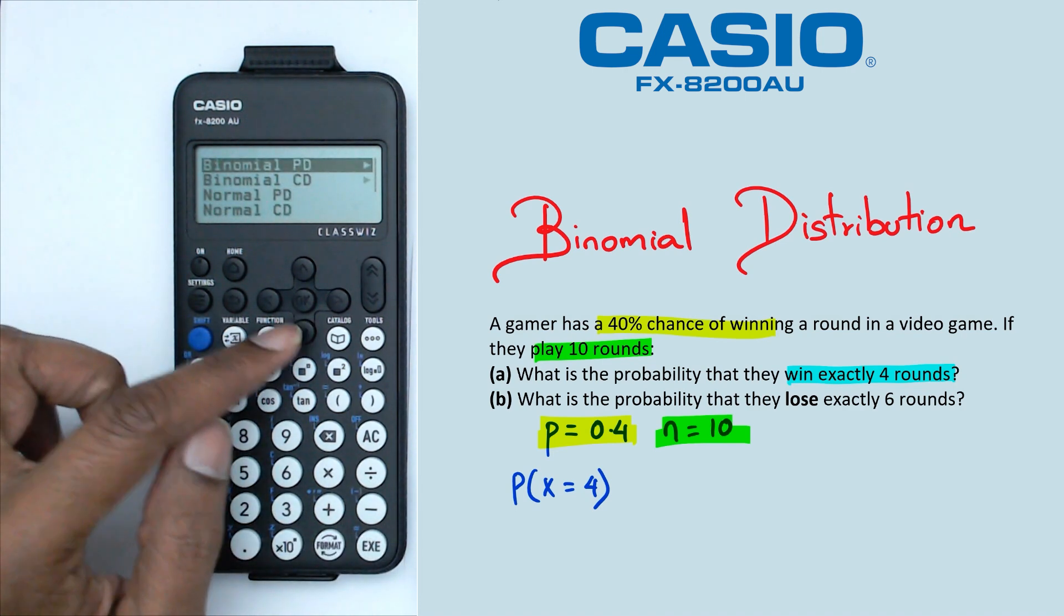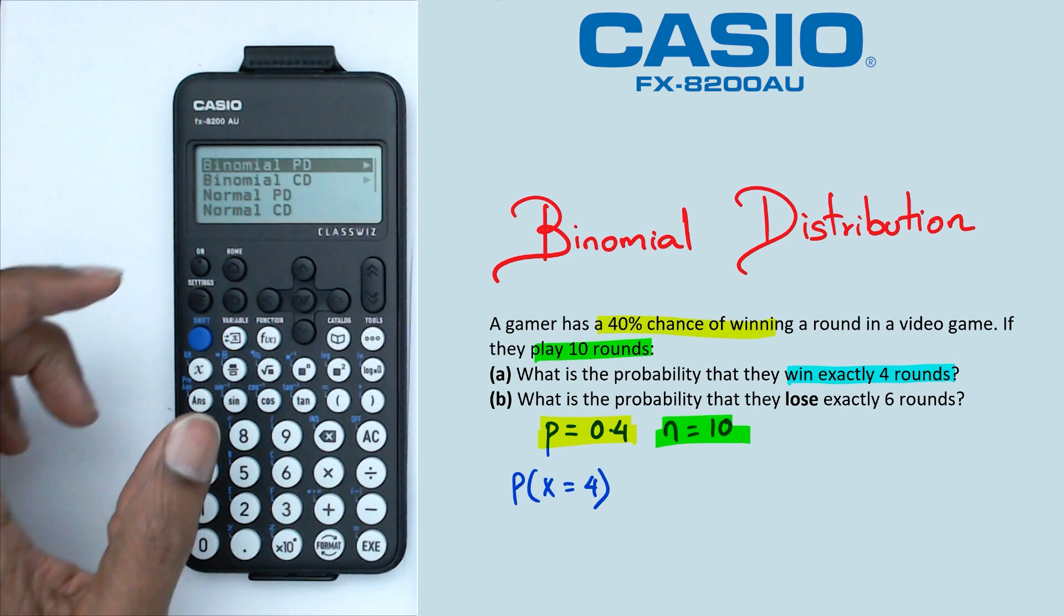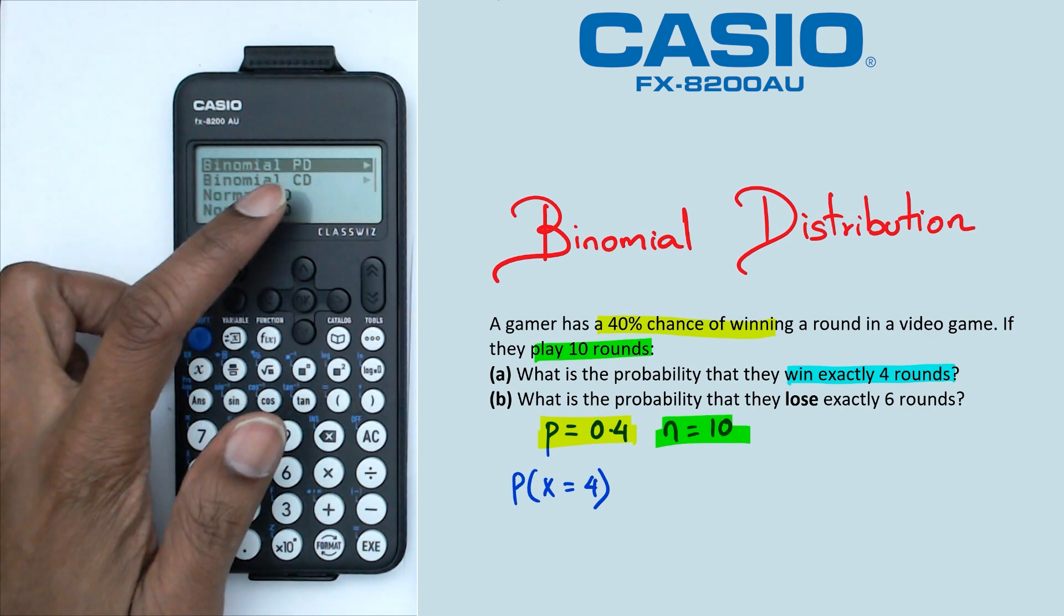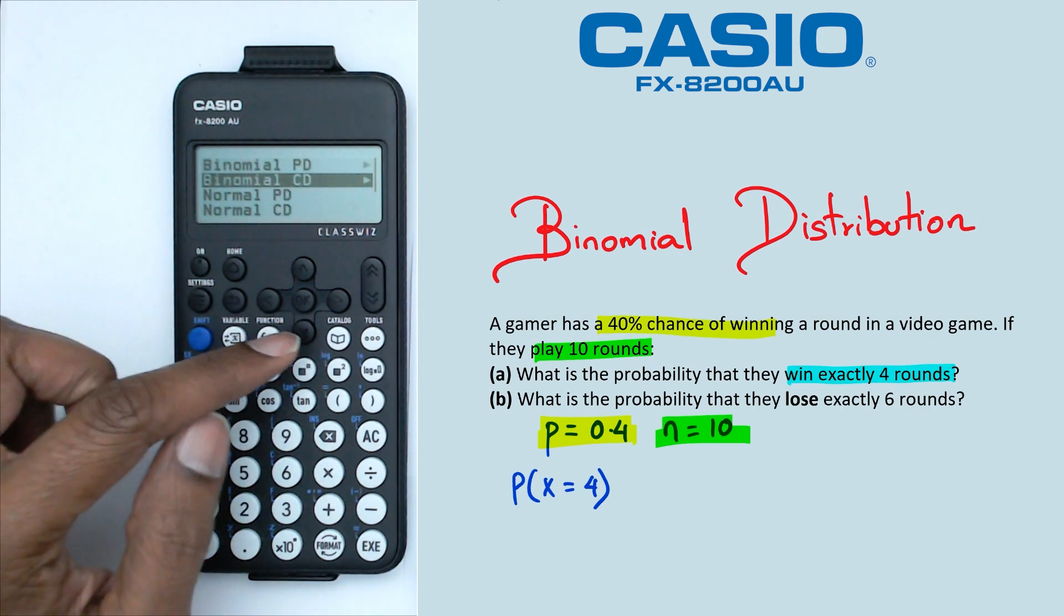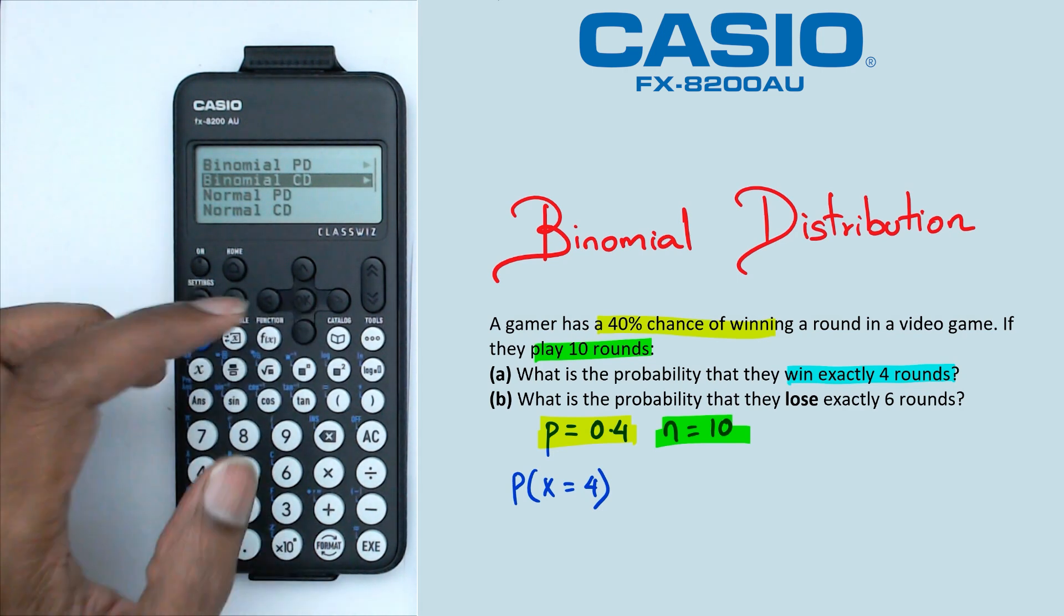Press EXE. And we're going to do binomial, but because we're looking for exactly four, we're going to use the PD, binomial PD. For binomial CD is when we do something like less than or greater than, and we'll do that in the next video.